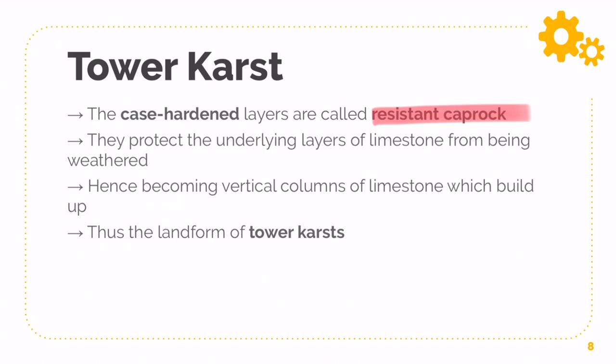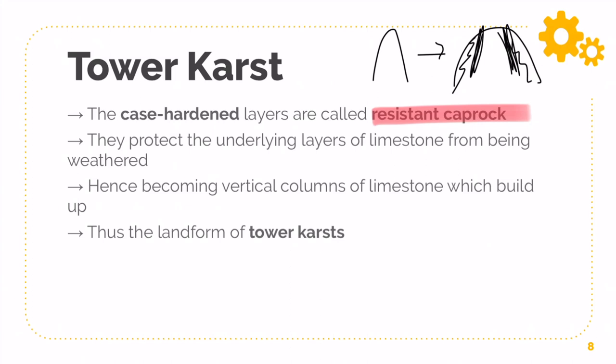As a result, when there's repeated rainfall and then drying — rain, drying, rain, drying — these resistant caprock layers build up layer upon layer. That is how they actually grow in diameter, expanding outward from a smaller form to something much wider. Because it also builds on top, it grows higher and higher as well. This is what we call the Tower Cast. You must know this because it's part of your syllabus — you have to understand what a Tower Cast is and how it forms.